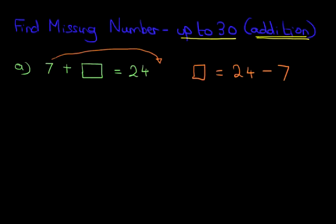So in this example here, we've got 7 plus something equals 24. On the right-hand side, we've got something equals 24 minus 7. 24 minus 7 is something that we can actually do using the vertical format. We'll do that over here.